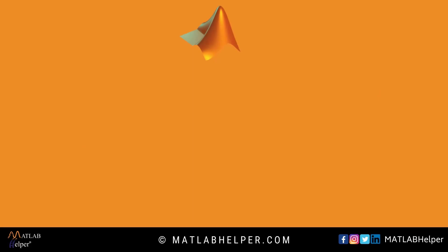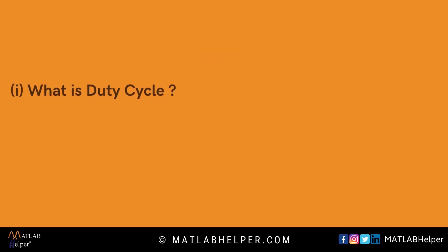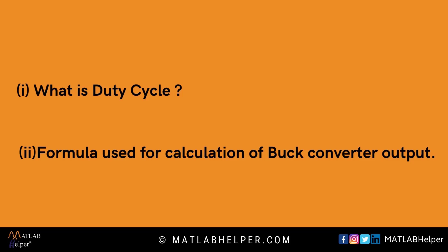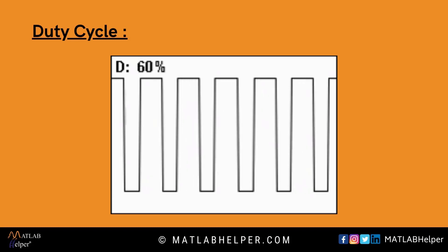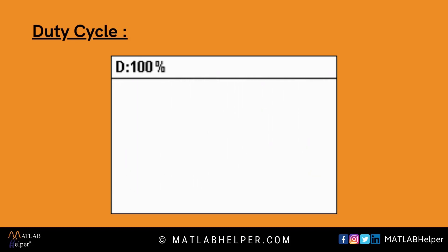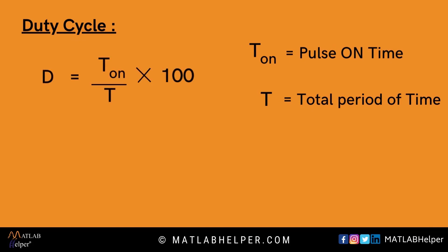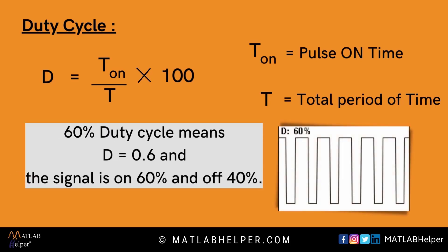Before moving to the MATLAB modeling of the buck converter, we need to know: first, what is duty cycle; and second, what is the formula and how is the output voltage of the buck converter calculated. A duty cycle is the fraction of one period in which the signal remains ON. Duty cycle is commonly expressed as a percentage or a ratio. Here, D equals T_ON divided by T, multiplied by 100. T_ON is the pulse ON time and T is the total period. Hence, a 60% duty cycle means D equals 0.6 — the signal is ON 60% and OFF 40%.